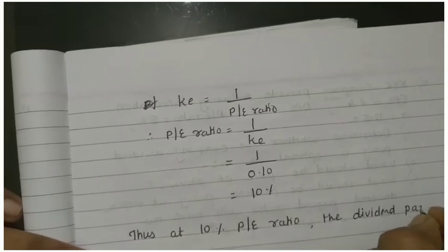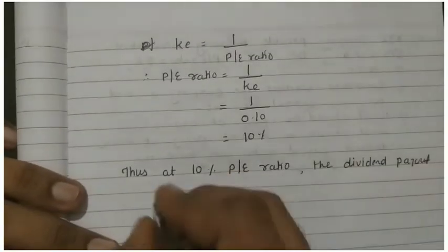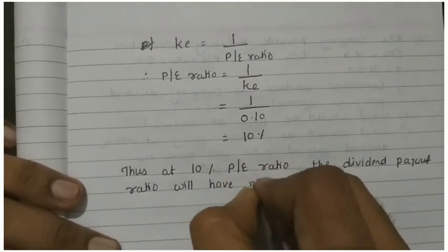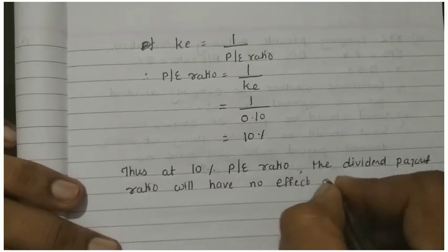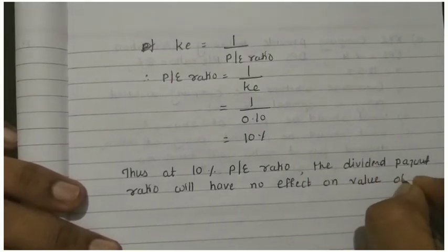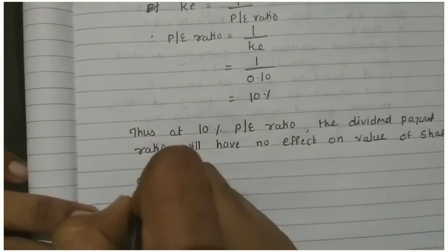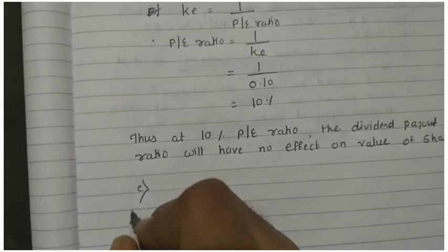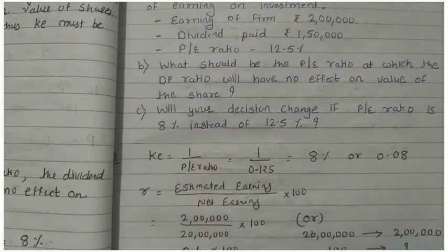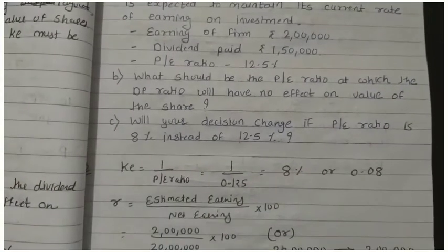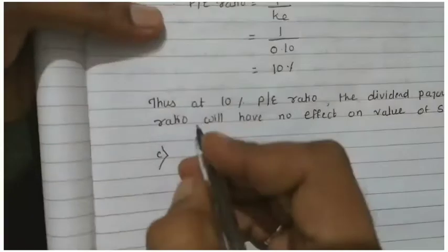Part C. Your decision is changed if the P/E ratio is different from that. P/E ratio is 8% instead of 12.5%.